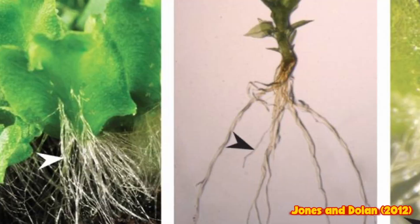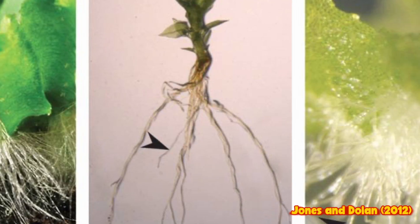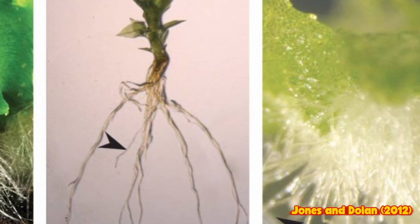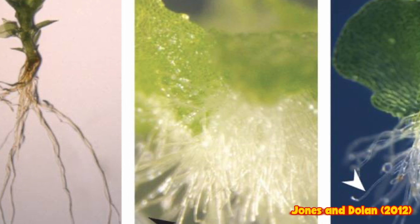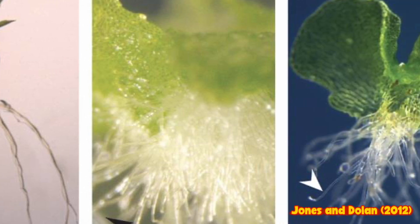I'll start off with rhizoids. These structures are sort of primitive roots that were not yet able to take up water efficiently, and primarily helped the plants to be grounded in their new environment. All present-day bryophytes and some species of green algae have rhizoids to attach to a substrate, and it is plausible that the ancestral green algae had rhizoid-like structures that adapted to a terrestrial environment.